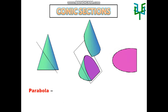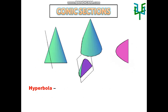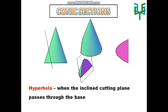A parabolic shape will be obtained when the inclined cutting plane passes through the base. A hyperbolic shape will be obtained when the inclined cutting plane passes through the base but not passing through the axis of the cone.